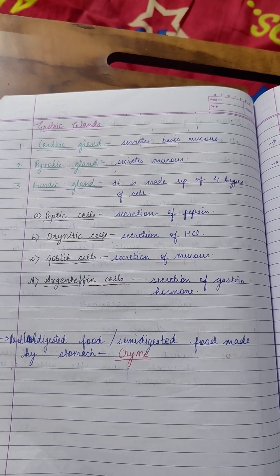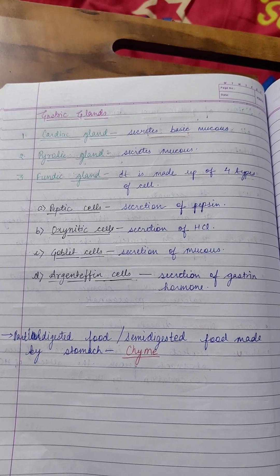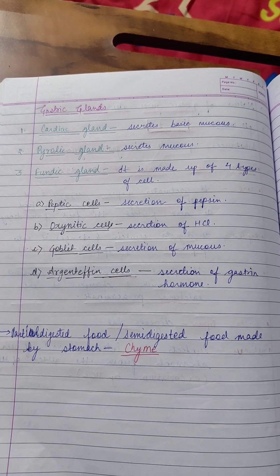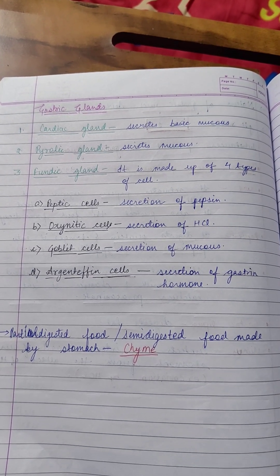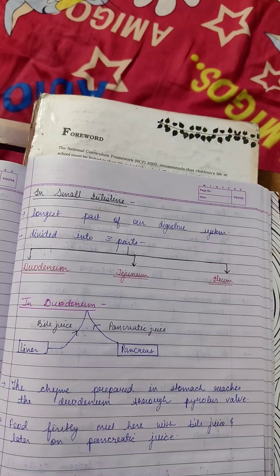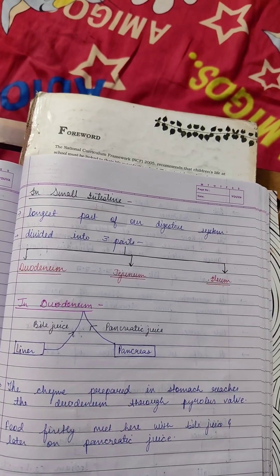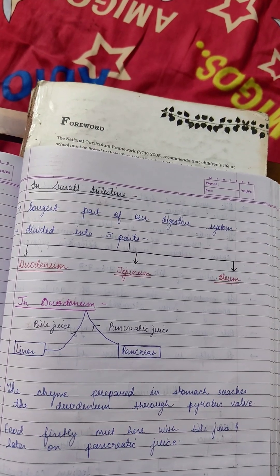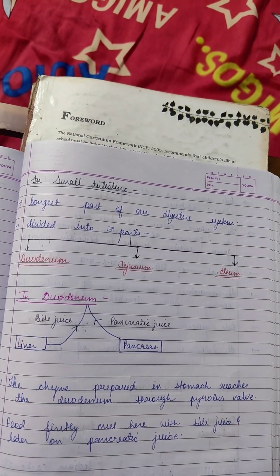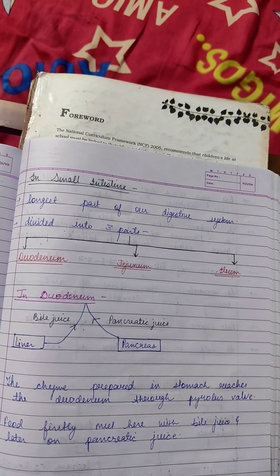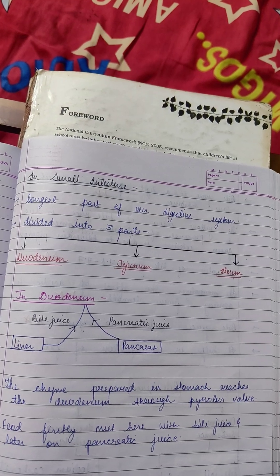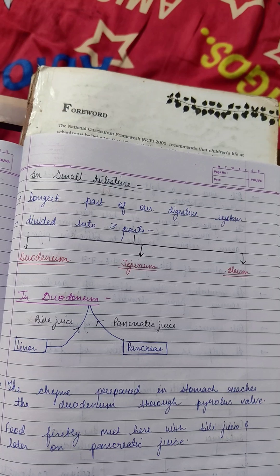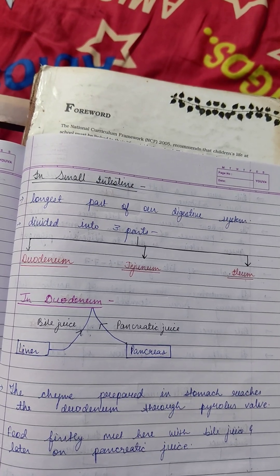In the stomach, there are gastric glands which secrete mucus and other types of cells, making a partially digested food known as chyme. The small intestine is the longest part of our digestive system. It is divided into the duodenum, jejunum, and ileum. In the duodenum, bile juice and pancreatic juice help in digestion of food. After the duodenum, the food reaches the ileum where digestion takes place.